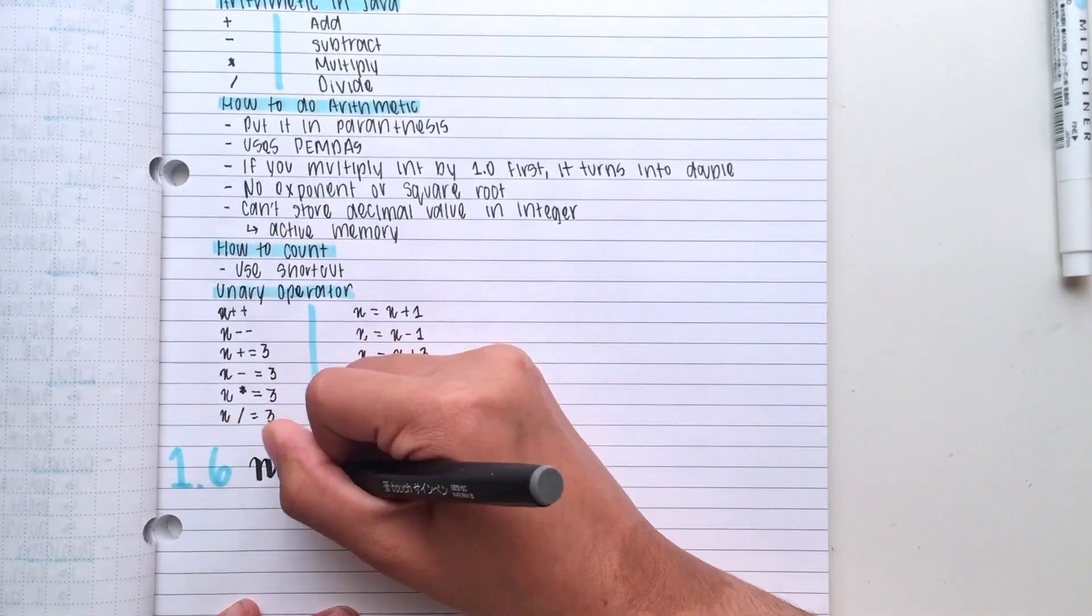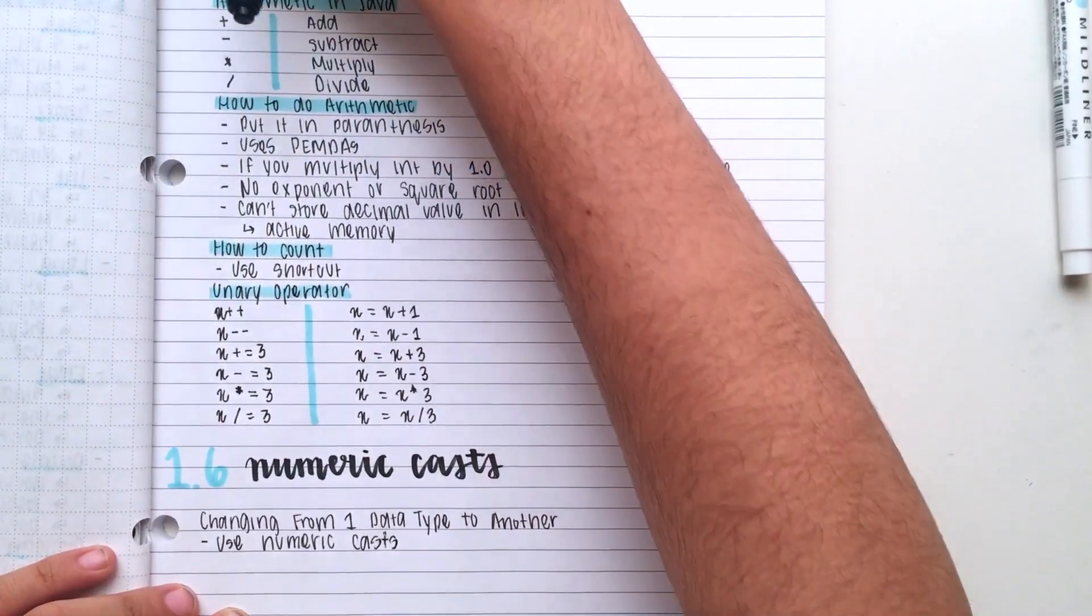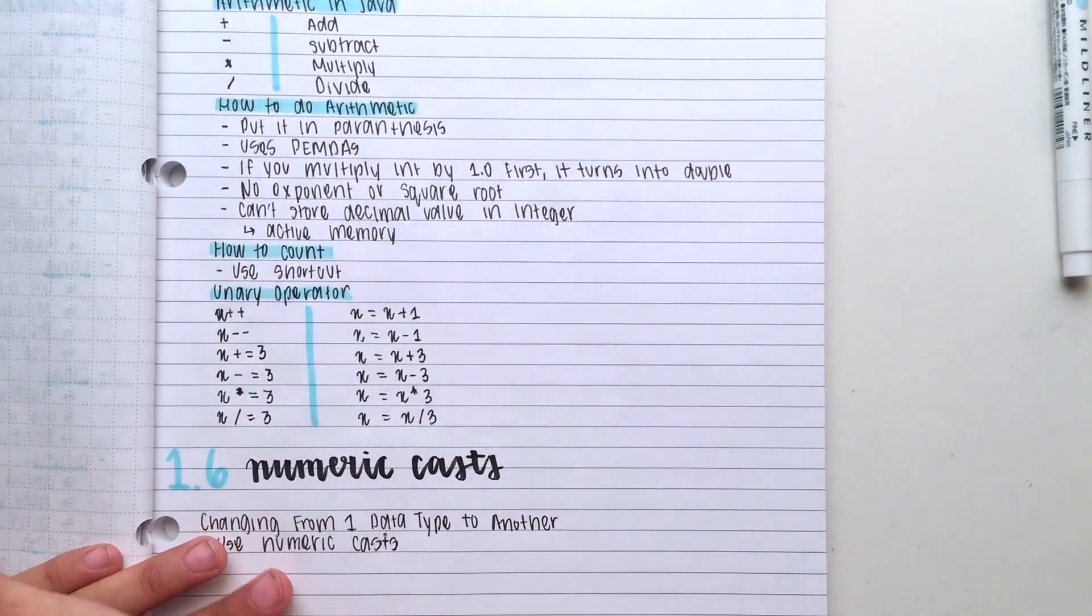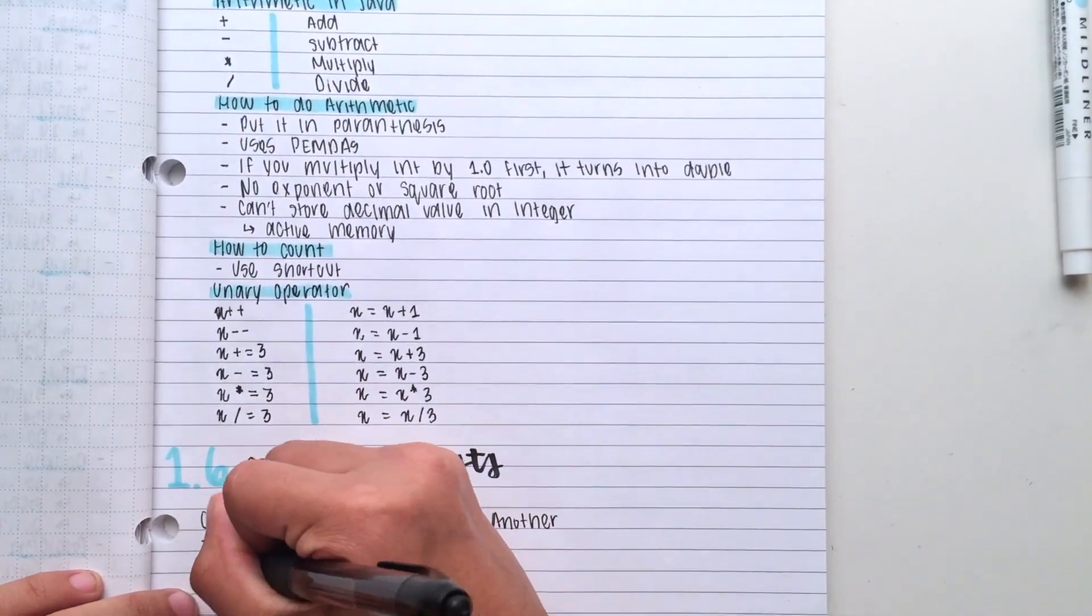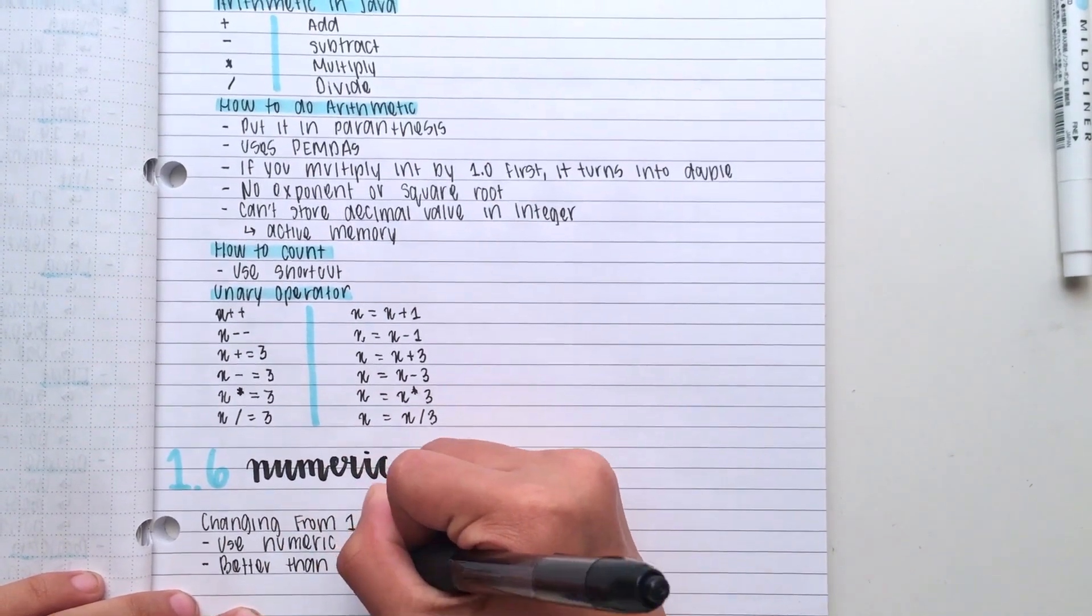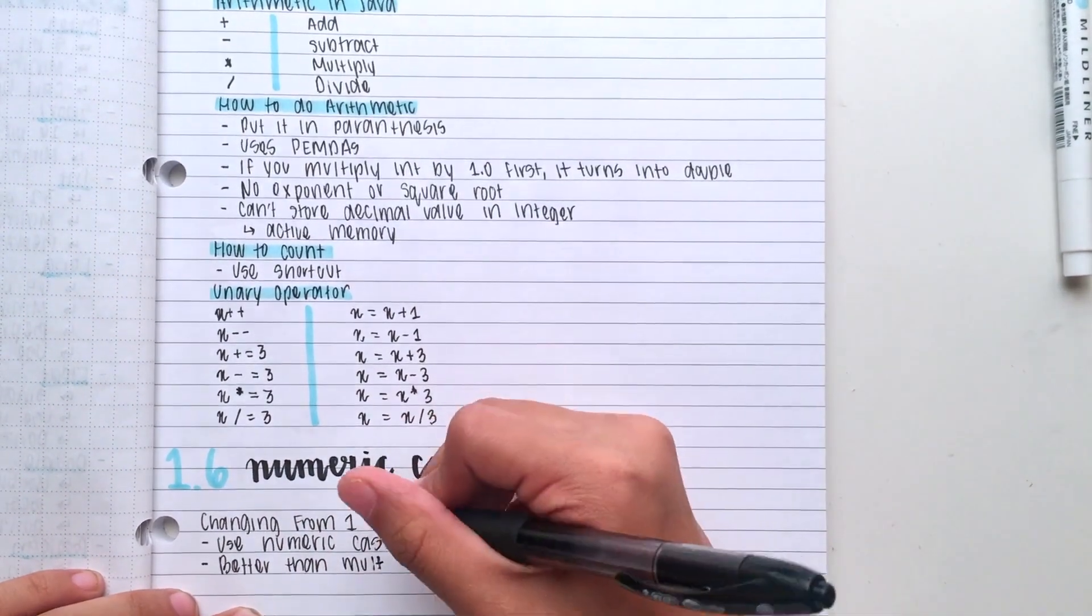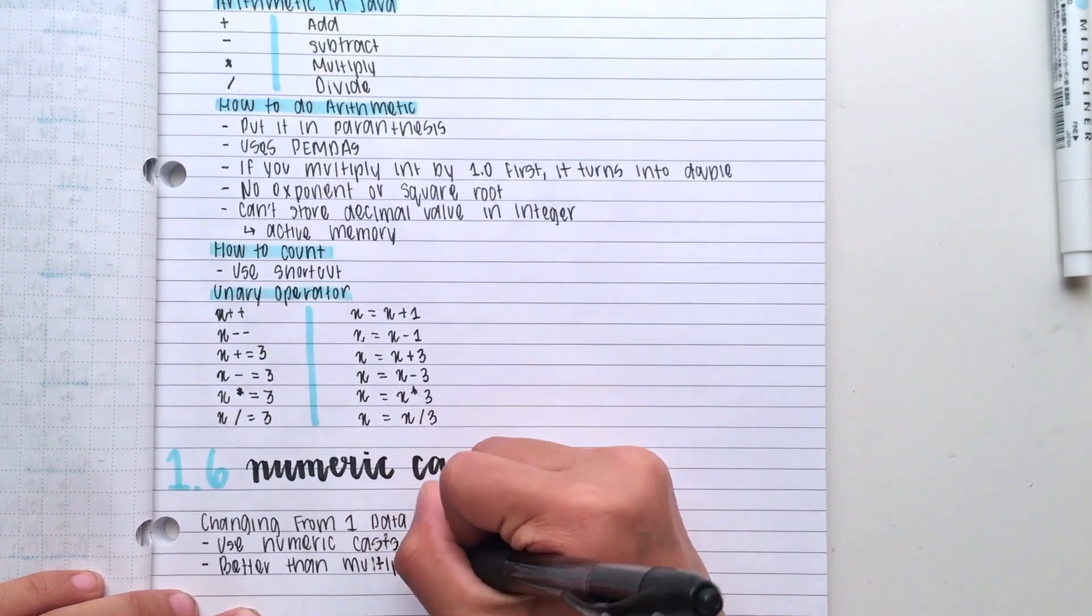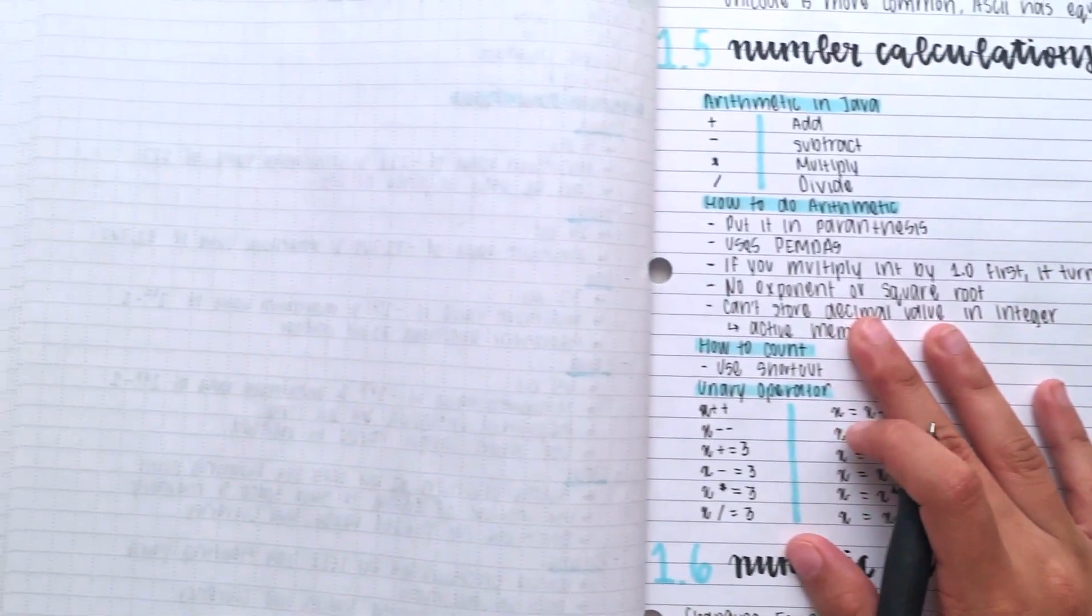Alright, now it's time for Lesson 6. I'm doing something a little different in this lesson compared to the last one. Since it is a computer science class, I have to learn how to code. And the way I write the examples for the code is by writing them on the page on the left.